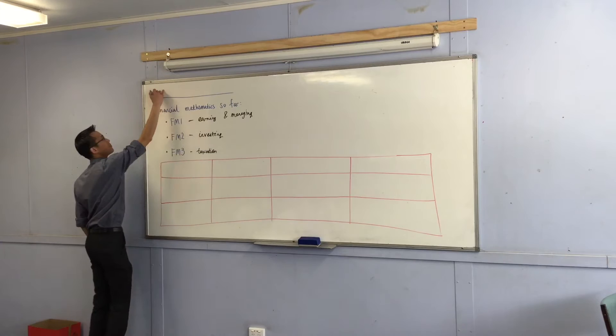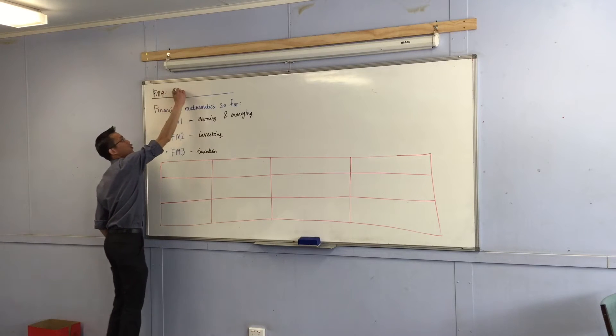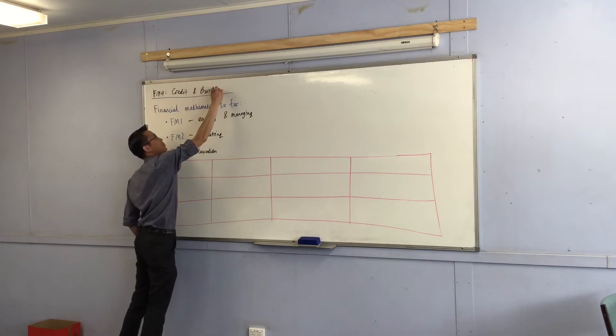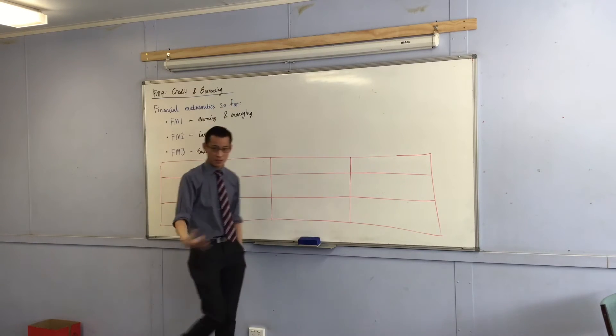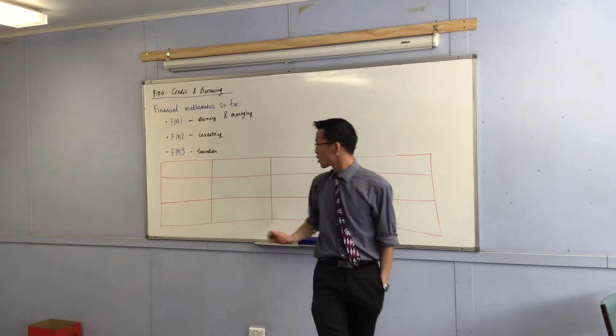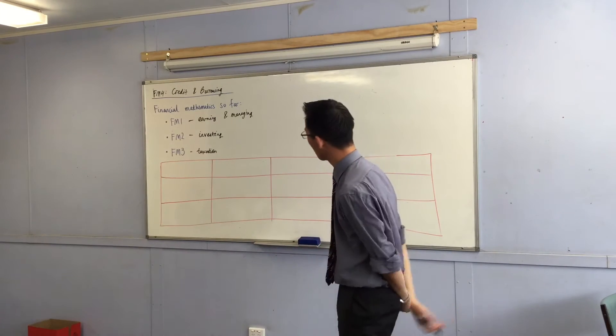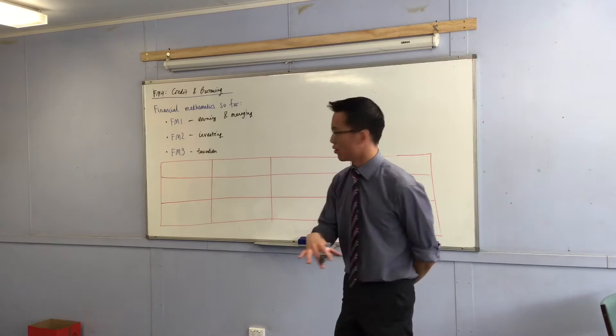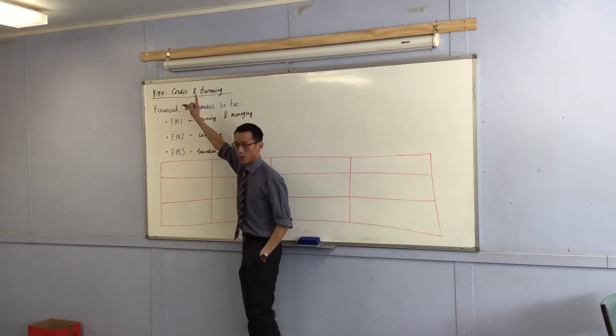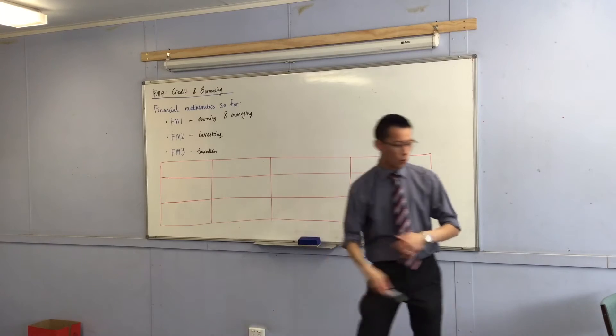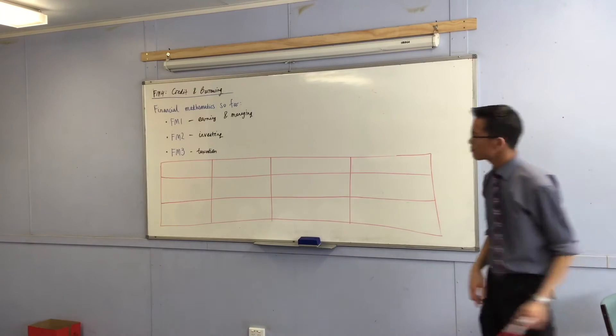FM4 is called credit and borrowing. Now the reason why I've drawn your attention to FM1, 2 and 3 is not just because it's always good to have a context of where you've come from and where you're going, but also this idea of credit and borrowing is very closely linked to one of the ideas that you've already looked at.